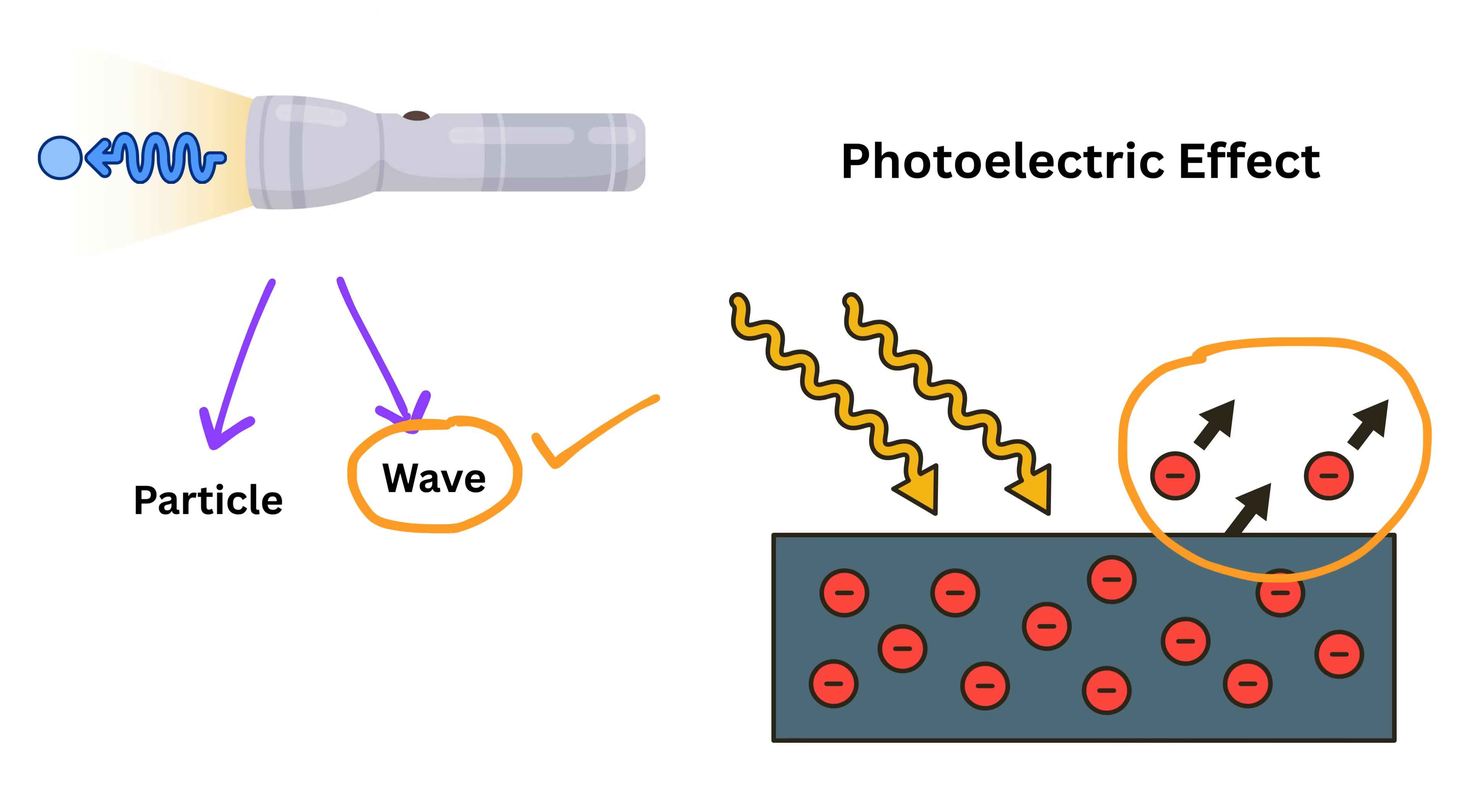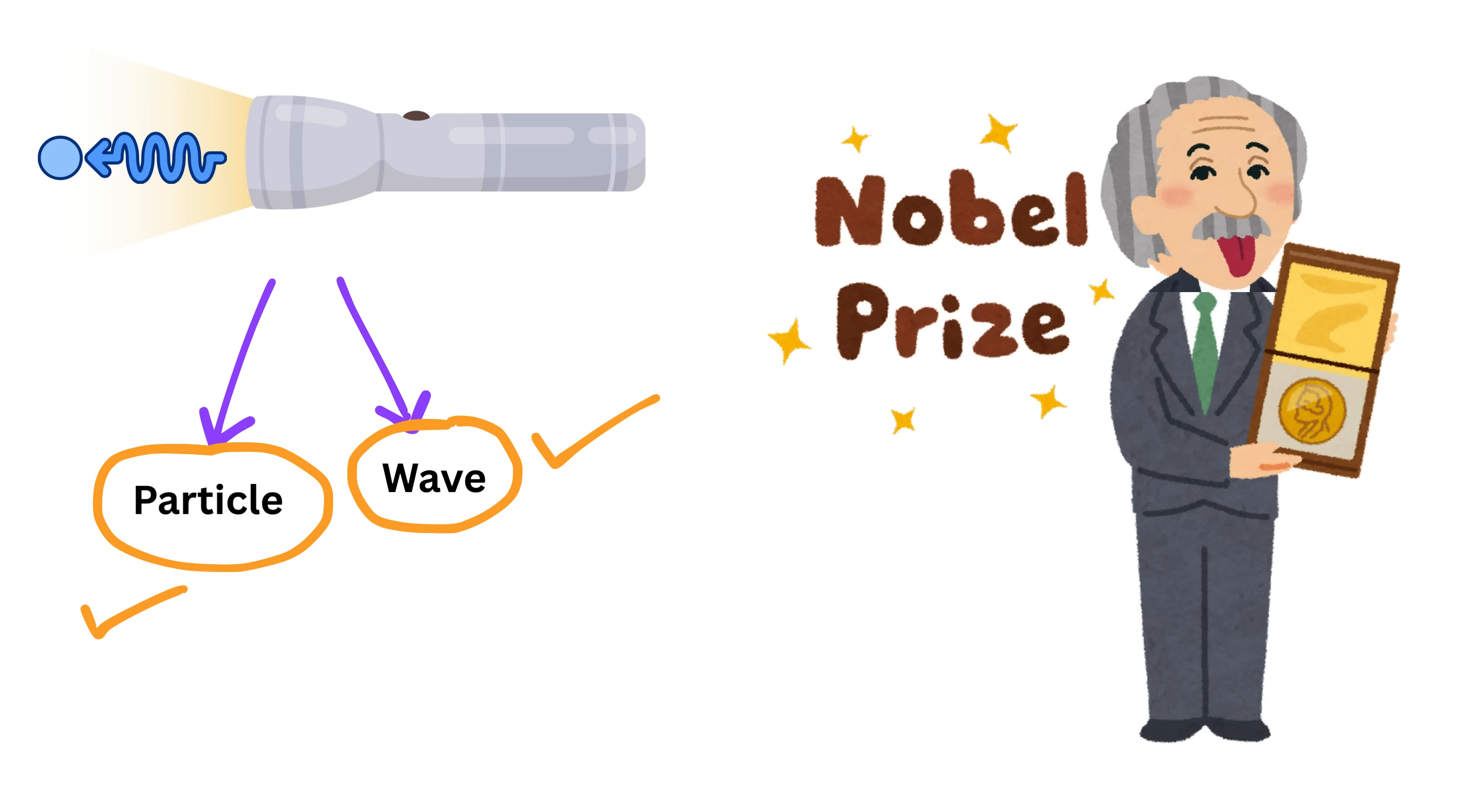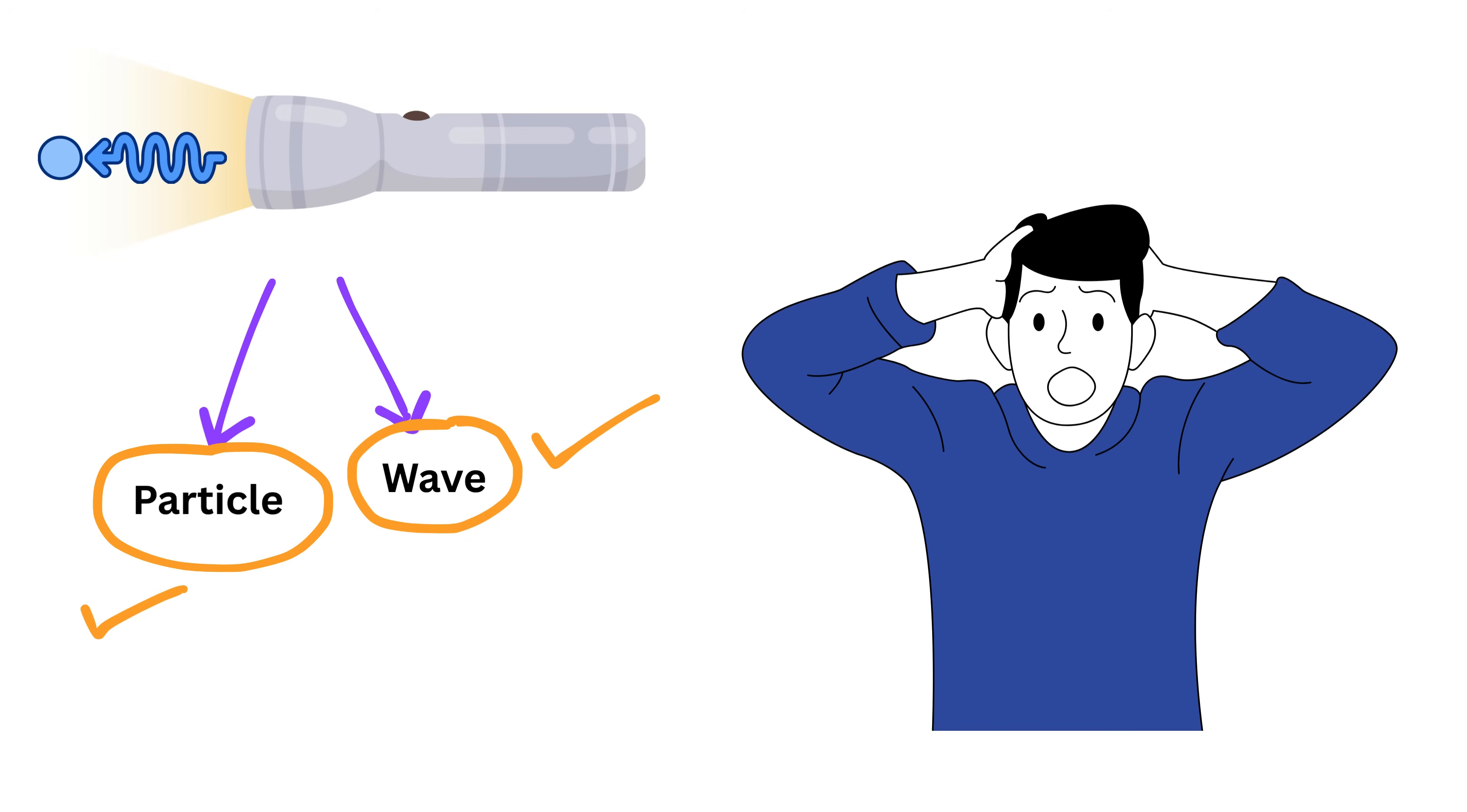This idea made perfect sense only if light behaved like a particle, not just a wave, and it earned Einstein the Nobel Prize in Physics in 1921. But then came an even more surprising question.